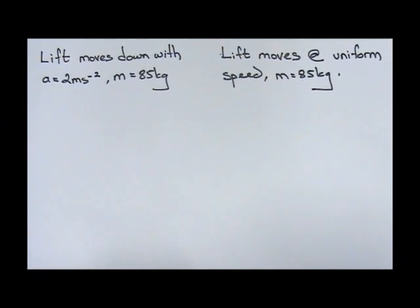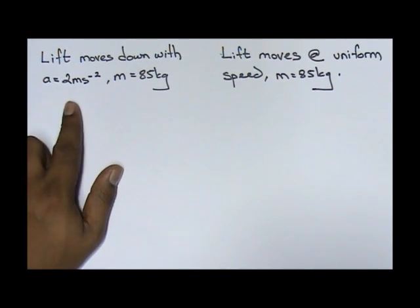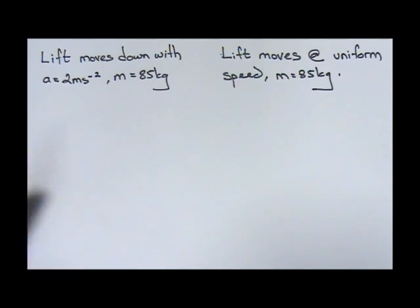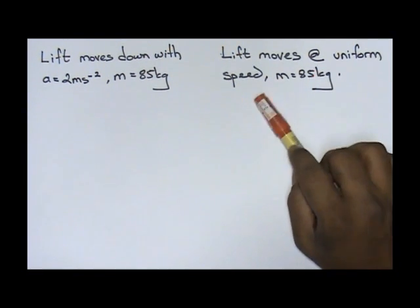Okay, now you have two situations. One: the lift moves down with acceleration 2 m/s² and mass is 85 kilograms. The same thing here. Now this one, the lift moves at uniform speed.